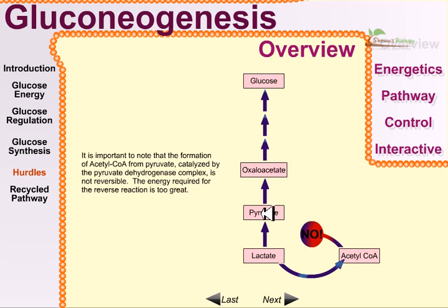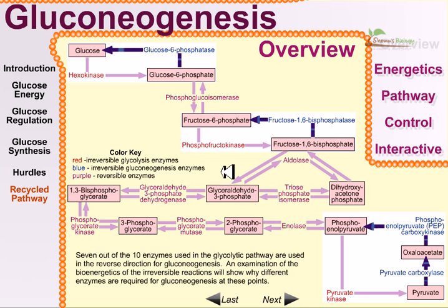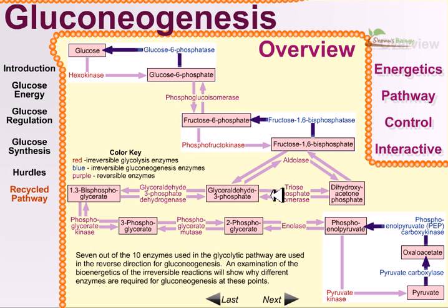It is important to note that the formation of acetyl-CoA from pyruvate, catalyzed by the pyruvate dehydrogenase complex, is not a reversible process — the energy required for the reverse reaction is too great. So the conversion of pyruvate to acetyl-CoA is a one-direction process only. Looking at the overview picture of glucose production from pyruvate, the pink pathways show the forward pathway and the reverse pathway is the actual gluconeogenesis route. Several steps are totally new and unique to gluconeogenesis, while several others are shared with glycolysis.